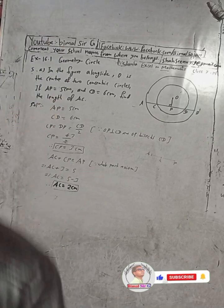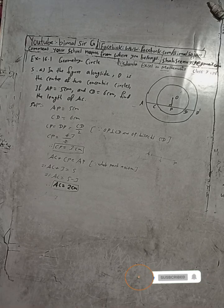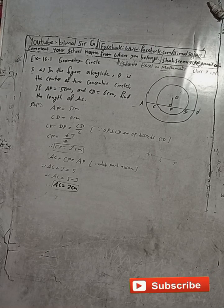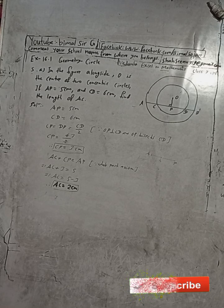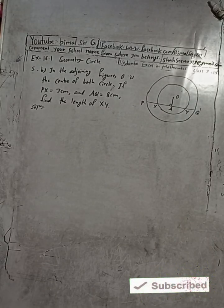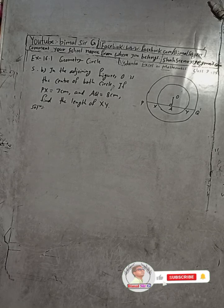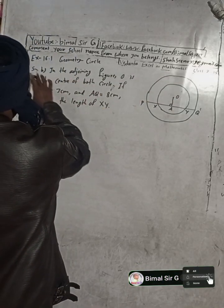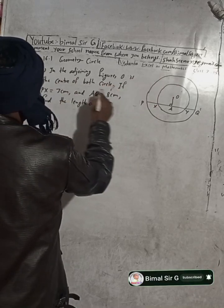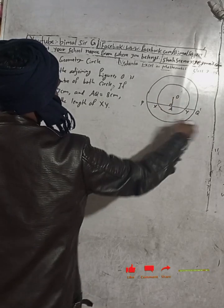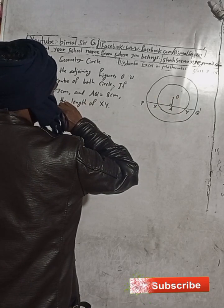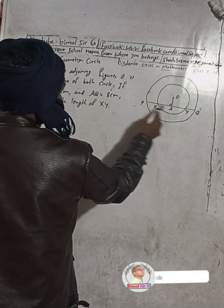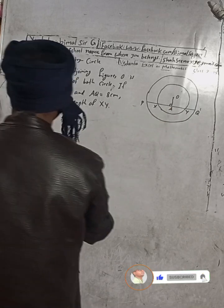So dear subscribers, this is the solution. Now, class 9 and 10 students, welcome back to Demersarji's YouTube channel. This is question number 5B, exercise 16.1, geometry circle, class 9. In the figure, O is the center of the concentric circles. PX is given as 3cm and AQ is given as 8cm. Find the length of XY.